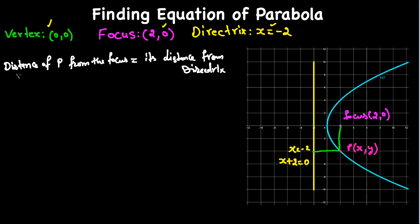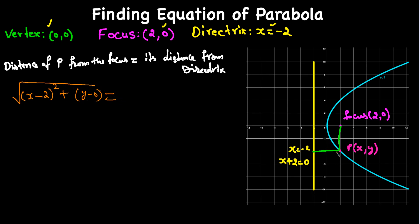For the left-hand side, we need the distance of point P from the focus. The focus is (2, 0) and point P is (x, y). Using the distance formula, this gives us √((x - 2)² + (y - 0)²).